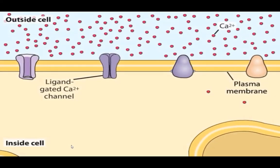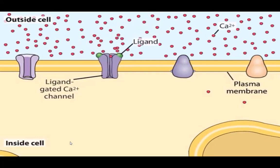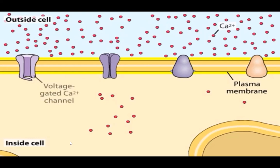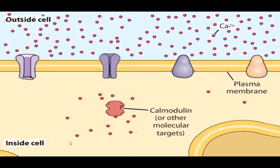Neurons use many different second messengers as intracellular signals. Here we will discuss calcium ions, which is perhaps the most common intracellular messenger in neurons. In one example, a ligand binds to a calcium channel, causing it to open and let calcium ions into the cell. In another example, a voltage change across the plasma membrane causes a voltage-sensitive calcium channel to open. This transient rise in cytoplasmic calcium concentration transmits information within the cell. The rise in calcium allows calcium ions to bind to a large number of calcium-binding proteins that serve as molecular targets, such as calmodulin.